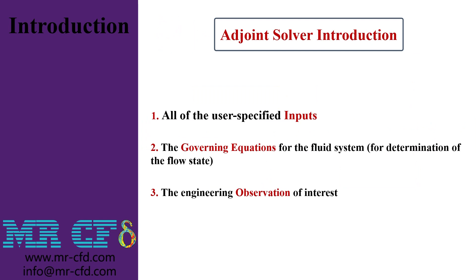In this step, we are going to talk about the adjoint solver. As was mentioned earlier, this tool and this method determines the sensitivity level for the investigated parameter on the geometry. There are three key elements in using this tool. The first factor is the set of data that we define as input parameters. The second factor is related to the equations governing the fluid system. And the most important element — the final factor — is actually the output parameter and the target parameter that we have introduced under the name of observable.